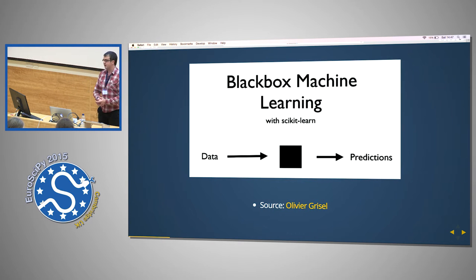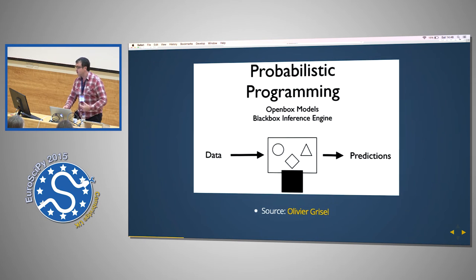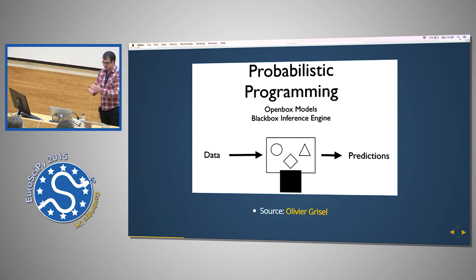So this is black box machine learning. This is from Olivia Grizel. Data goes in, black box, predictions. That's it. I know there's scikit-learn people here. I hope I really didn't offend anyone. Whereas with probabilistic programming, as Olivia pointed out as well, you've got data, you've got a black box inference engine, but you've got open box models. And you can look at my code, and you can see how the model is specified. You can see where all the assumptions are.